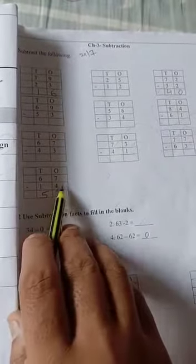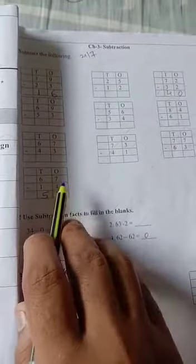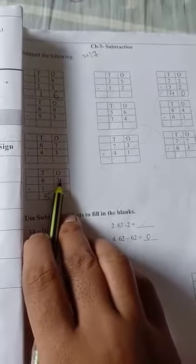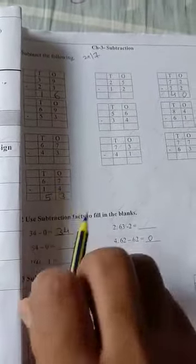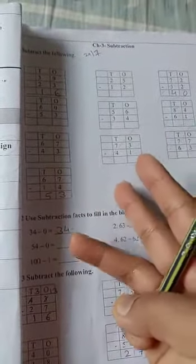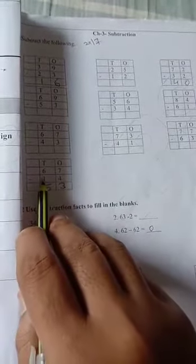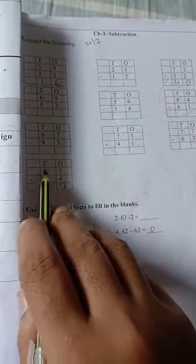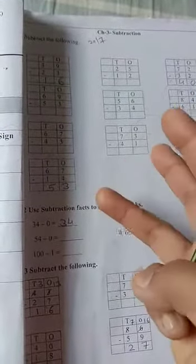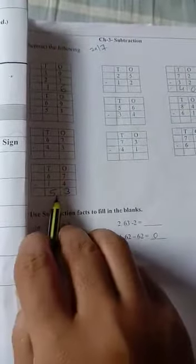Now here, 67 minus 14. 7 minus 4. So 4 after till 7: 4 after 5, 6, 7. 3 fingers will be open. Our answer is 3. Now 6 minus 1. So 1 after till 6: 1 after 2, 3, 4, 5, 6. We open 5 fingers. So our answer is 5.